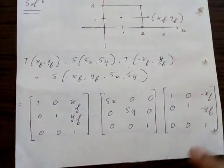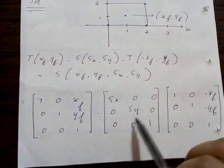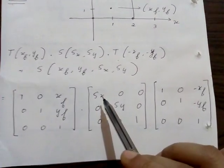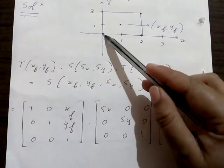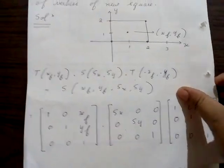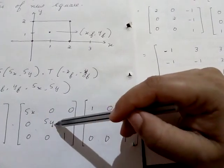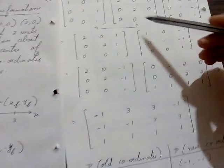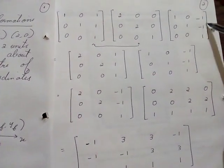These are the general matrices for all three steps. The first matrix is translation where tx and ty are xf and yf. The second matrix is for scaling where you have the scaling factors sx and sy. The third is inverse translation with minus xf and minus yf. Substituting the values: xf = 1, yf = 1; sx = 2, sy = 2; and minus xf = -1, minus yf = -1.